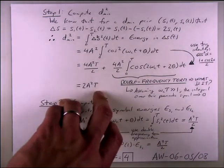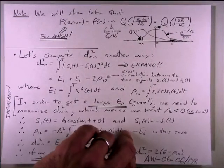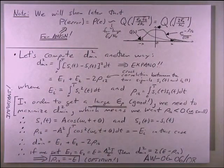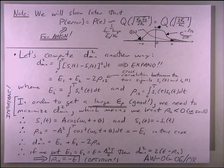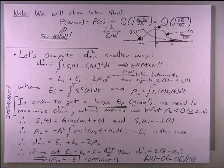There's also a linear-algebra approach to finding d_min². Expanding [s1(t) − s2(t)]², you get: integral of s1²(t) + integral of s2²(t) − 2·integral of s1(t)·s2(t) dt. The first two integrals are just Es1 and Es2. The third integral — the product of the two waveforms integrated — is actually the dot product between s1 and s2, i.e., a correlation coefficient.